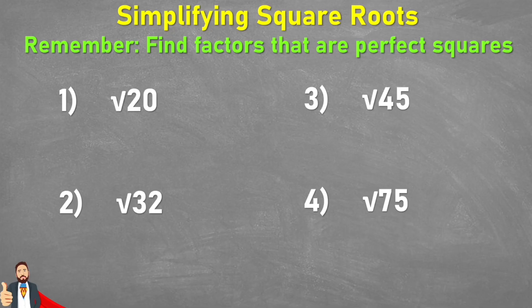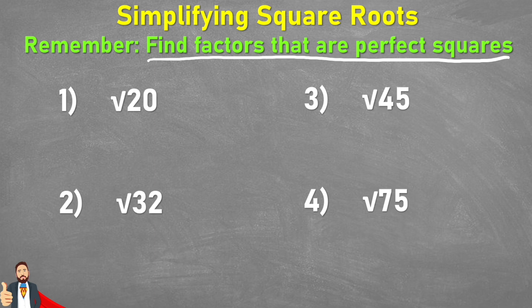What we need to remember is that we are going to be finding factors that are perfect squares. So what does that mean? Let's have a look at this first example. We have the square root of 20. Now 20 is not a perfect square, meaning that it doesn't have two identical numbers that when multiplied together equal 20. So 20 is not a square number. We're trying to find a square number so that we can simplify this form.